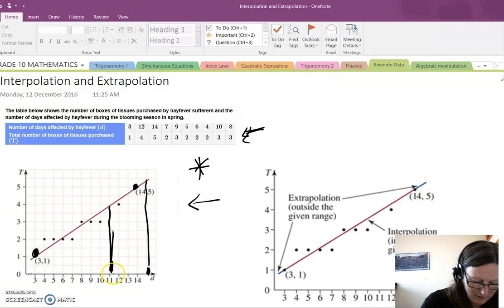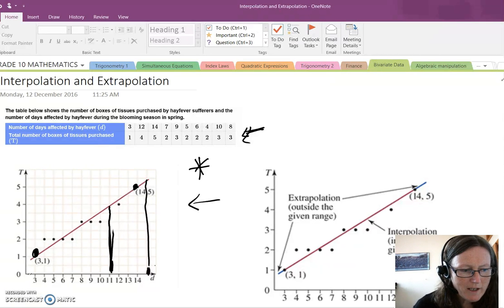Predictions involving interpolation, so this example here, are considered to be quite reliable. Those involving extrapolation should be treated with caution as they rely on the trend of the line remaining unchanged beyond the range of data.